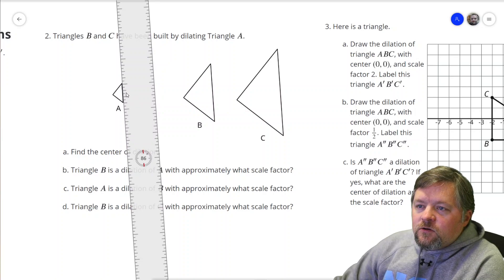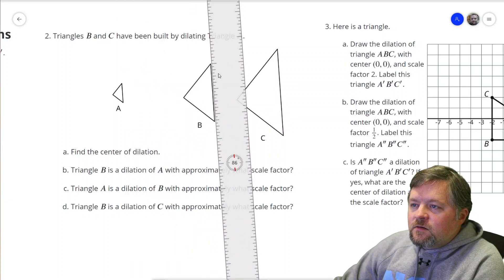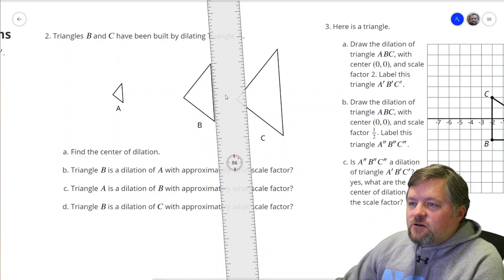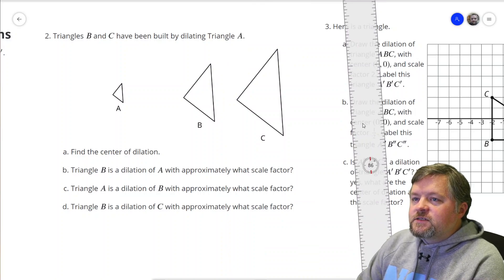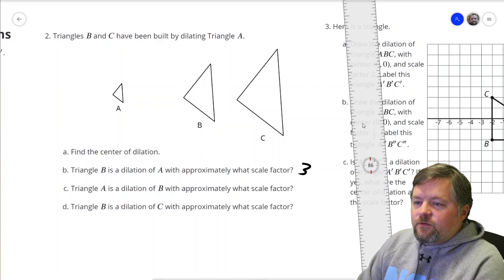[Counting from 1 to 18 along the triangle side] That looks like a scale factor of, what do we multiply 6 by to get 18? Scale factor of 3.